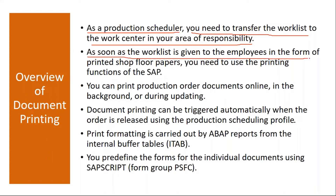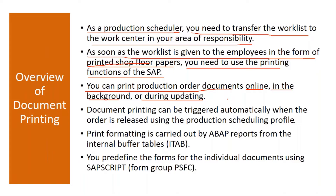To pass on that information, they print shop floor papers. As soon as the work list is given to employees in the form of printed shop floor papers, you need to use the printing functions of SAP. You can print production order documents online, in the background, or during updating. There are various methods — either you can print online or as a background job, or even when you update the production order, you can do that printing.